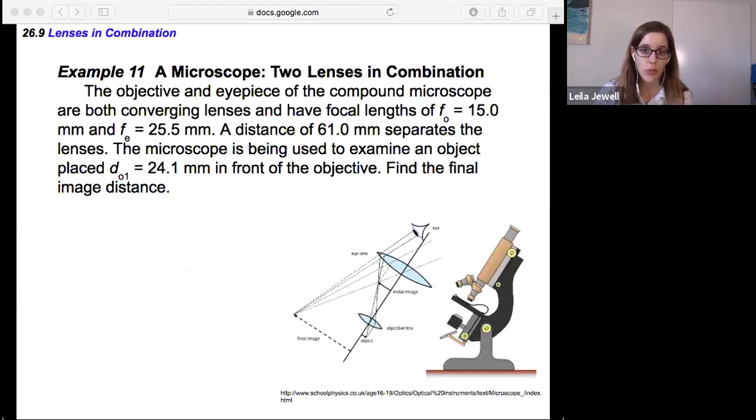So let's look at an example of this with a microscope, which was what the previous one was. Okay, good. So we can go through the math of what we just saw with the ray diagram. So this example matches the previous slide. So it says the objective and eyepiece of the compound microscope are both converging lenses and have focal lengths of FO is 15 millimeters and FE is 25.5 millimeters. A distance of 61 millimeters separates the lenses. The microscope is being used to examine an object placed DO1 equal to 24.1 millimeters in front of the objective. Find the final image distance.